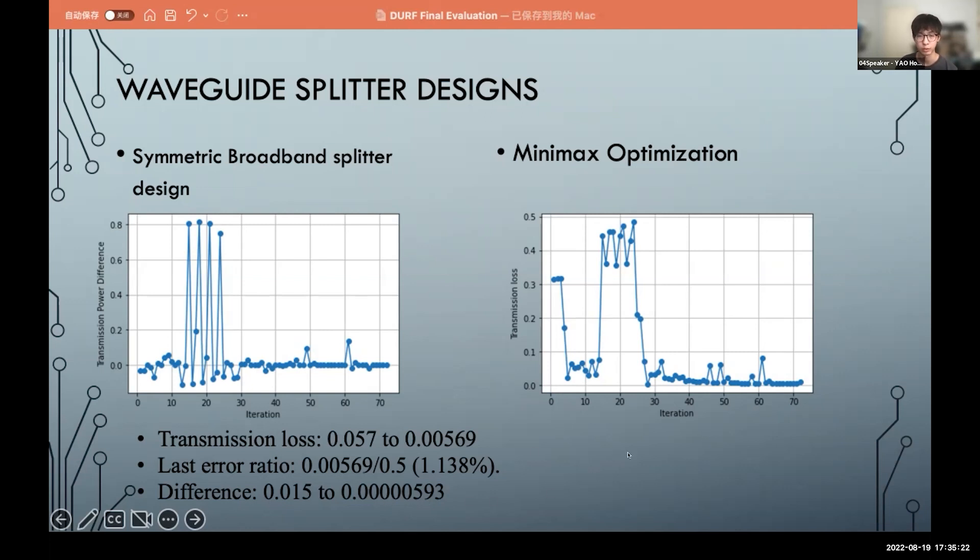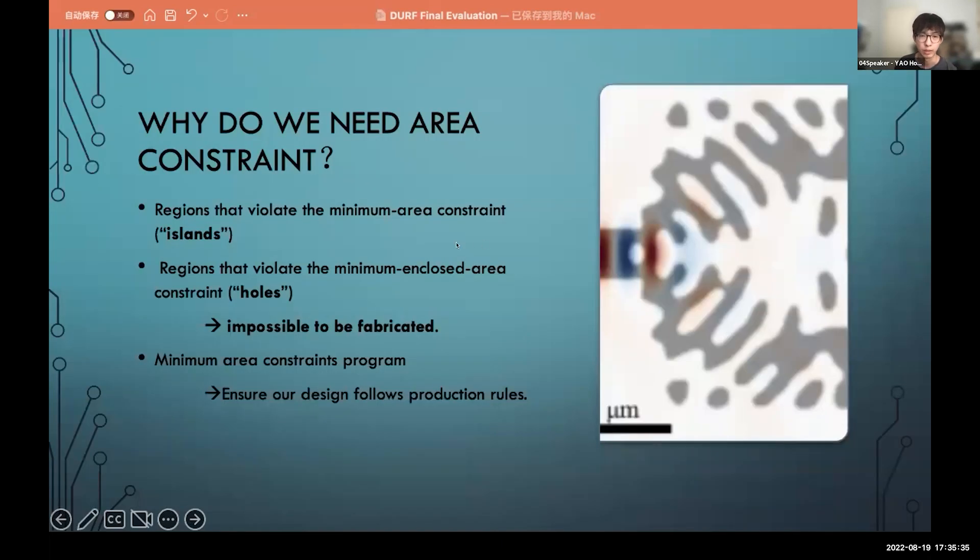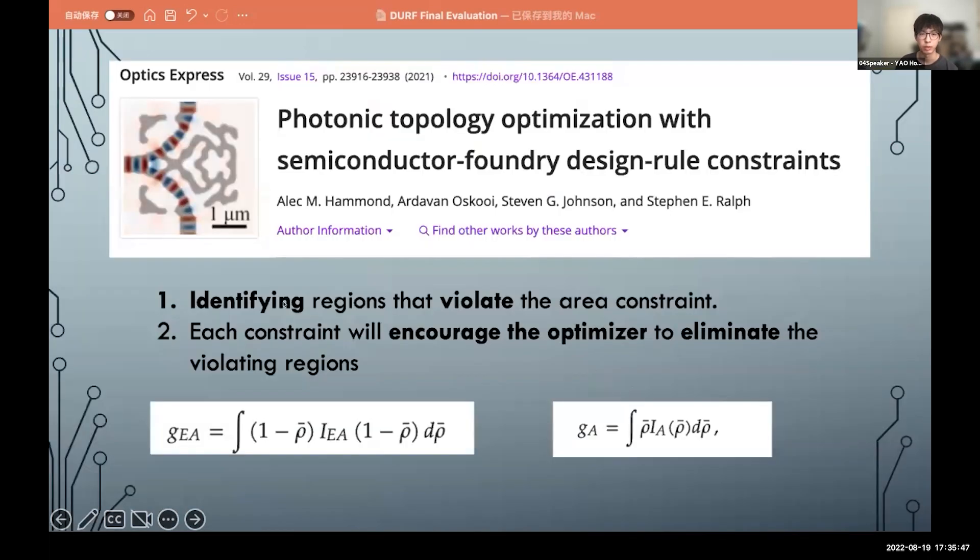So here is the future task. You're almost running out of time, could you wrap up? Okay, I will be fast. Here's the area constraint. And in the fabrication, these islands and these holes are impossible to fabricate because they're too small, and we want to eliminate this.